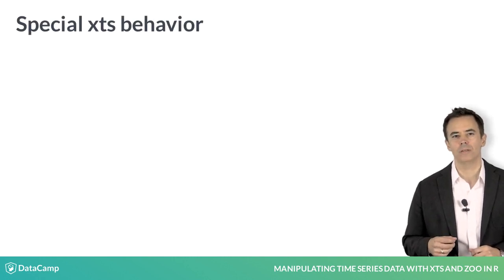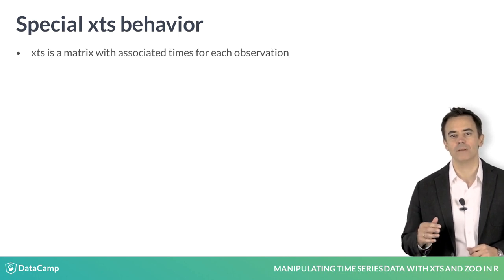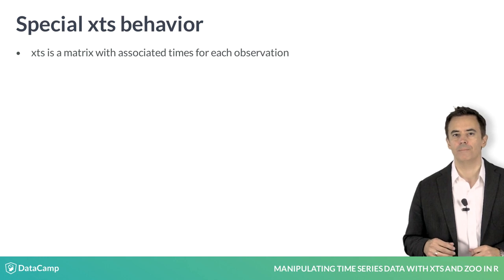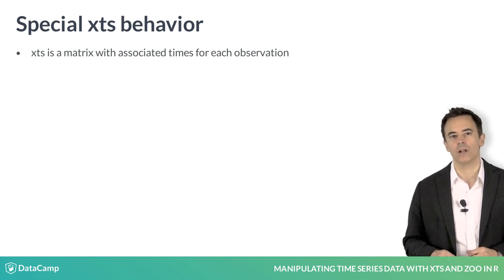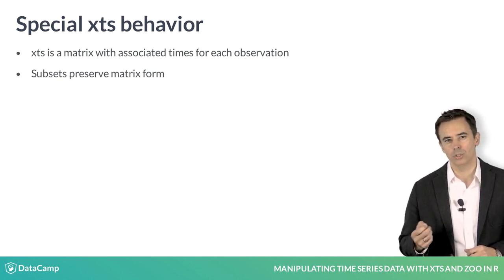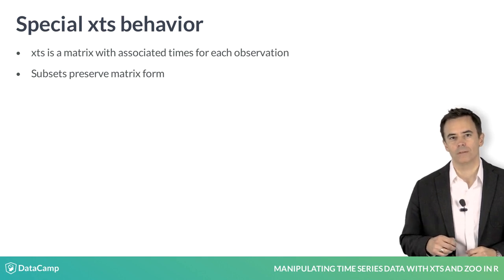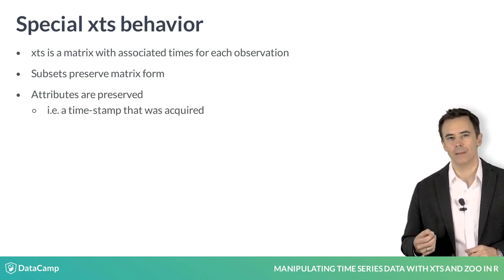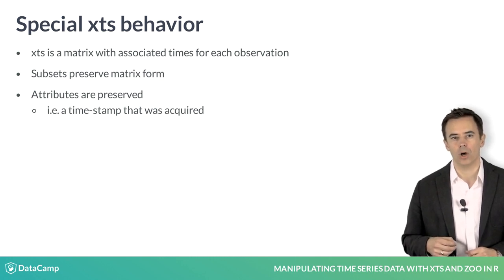So what makes XTS special? XTS is a matrix that has associated times for each observation. Basic operations work just like they would on a matrix, almost. One difference is that subsets will always preserve the object's matrix form — choosing one or more columns always results in another matrix object. Another difference is that attributes are generally preserved as you work with your data, so if you store something like a timestamp of when you acquired the data in an XTS attribute, subsetting won't cause that information to be lost.